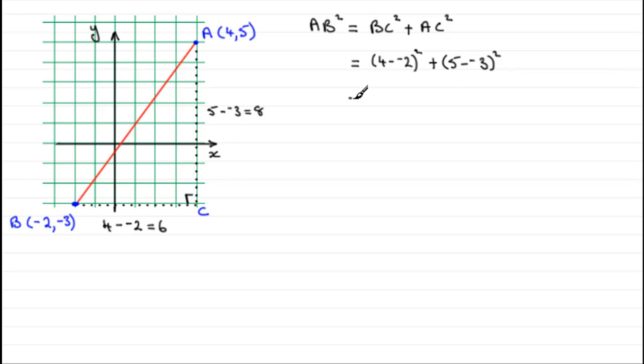So what we have here is that we have 6 squared, which is 36, and 8 squared, which is 64. If we add these two together, we get 100. And then to get AB, what we need to do is do the square root of 100, which is clearly 10.